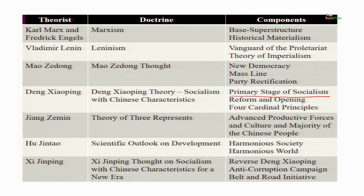Mao especially targeted Liu Shaoqi and Deng Xiaoping. But once Mao died and Deng Xiaoping came to power, he said the continuous revolution concept and mass line concept would not continue. Instead, focus should be on economic development because China was in the primary stage of socialism. For the next 100 years — this was said in the 1980s — China would focus on economic development under the rule of the Communist Party.